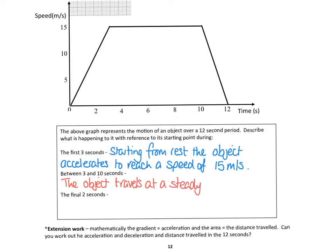Or you can say constant of 15 meters per second. And then finally, last two seconds, the object decelerates to rest from 15 meters per second in a time of two seconds. So every second, its rate of deceleration, every second it loses seven and a half meters per second.